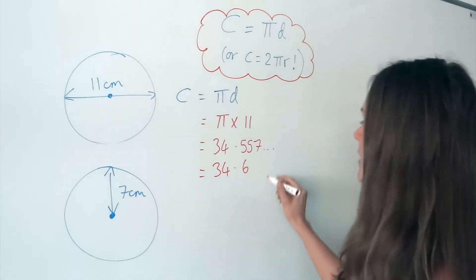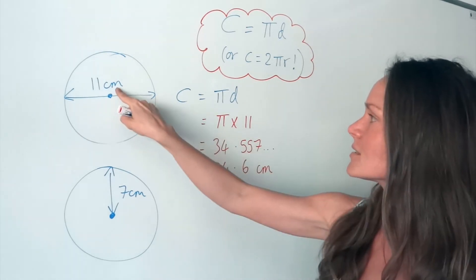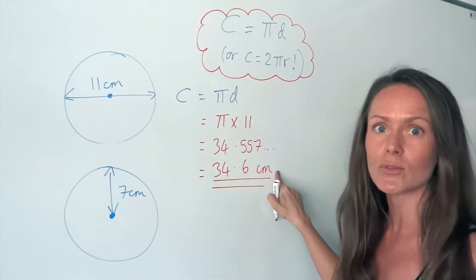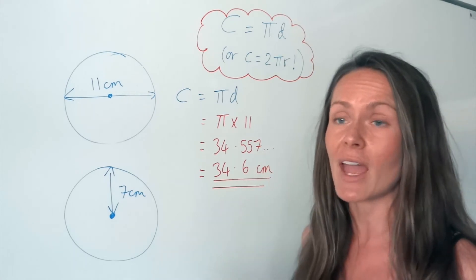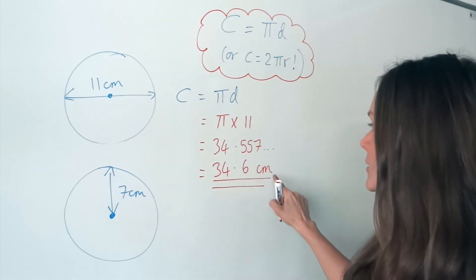Don't forget the units. In this question, we're using centimetres, so the circumference is also in centimetres. Don't go putting a squared on this one, that's just for area. Here, we're doing distance, so it's centimetres.